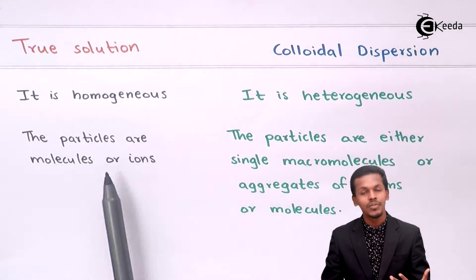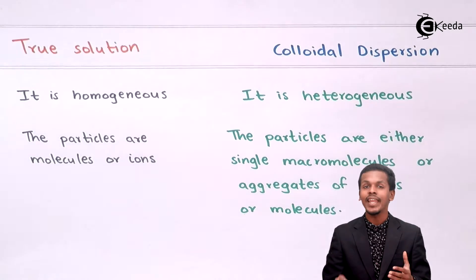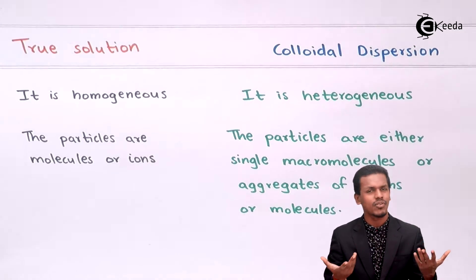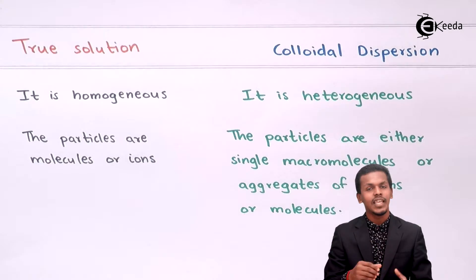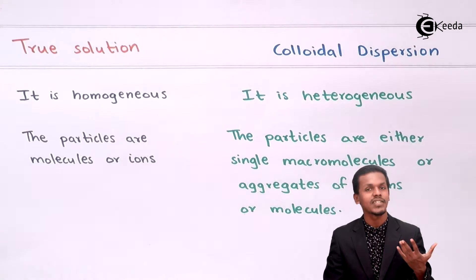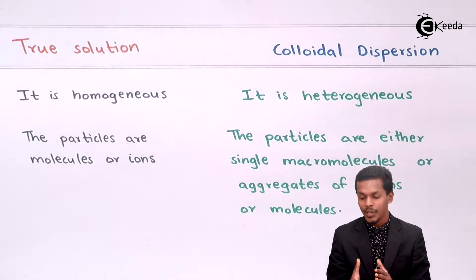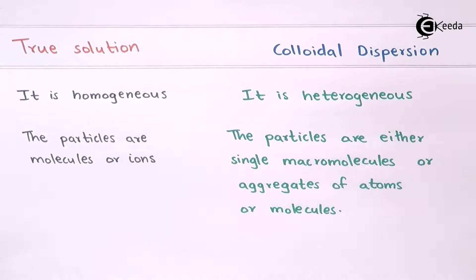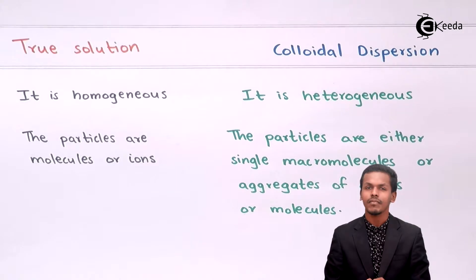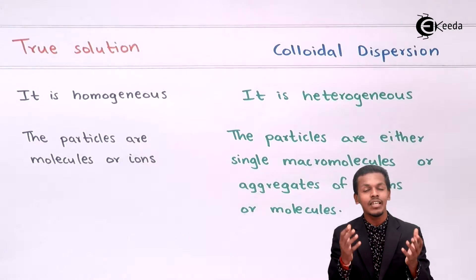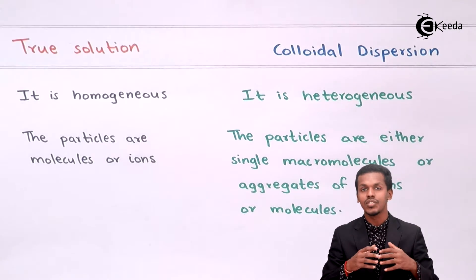The second point is that in true solutions the particles are molecules or ions. Any solute dissolved in a particular liquid or phase — the particles of both solute and solvent are either molecules or ions. That is how a true solution is formed. But in colloidal dispersion, the particles are either single macromolecules or aggregates of atoms or molecules. The particles aggregate with each other to form a single macromolecule.